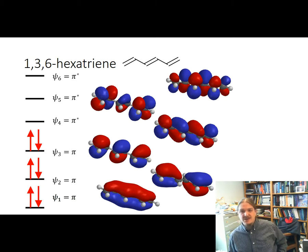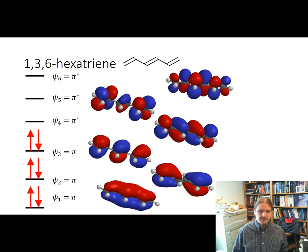The 1,3,6-hexatriene really highlights the linear combination concept that goes into constructing molecular orbitals, where you can look at the six different pi molecular orbitals and get a pretty clear understanding that not every p orbital on every atom contributes equally to every pi orbital. And that is generally the case.